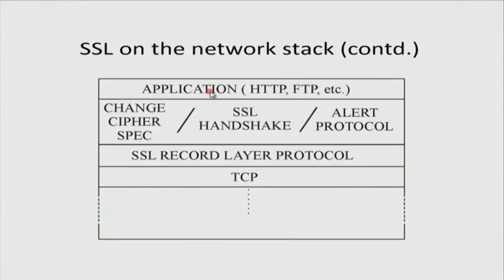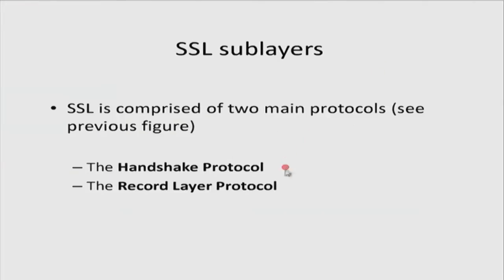In terms of the picture: this is the application layer, this is the transport layer, and between the two sits SSL. The SSL protocol itself has two parts: the most important one is the SSL handshake protocol, and then the SSL record layer protocol. There is also a change cipher spec protocol which acts as the transition between the handshake and the record layer. When you come to the lab in the afternoon, you will use Wireshark to inspect all those messages and the digital certificate.